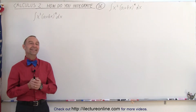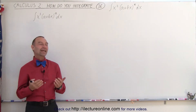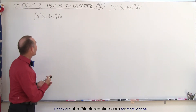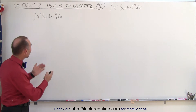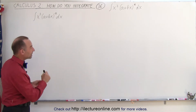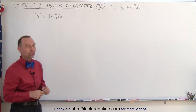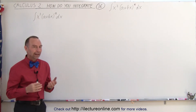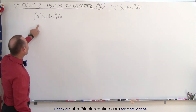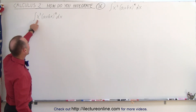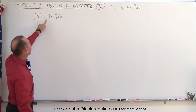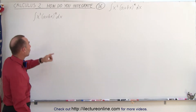Welcome to ElectronLine. Here we have the more general case where we have x squared times the quantity a plus bx to the nth power. The strategy is usually to get rid of that x squared, because if that x squared wasn't there, this would be an easy integral.